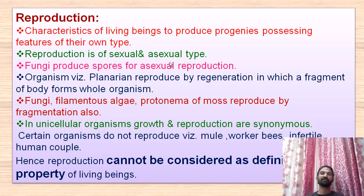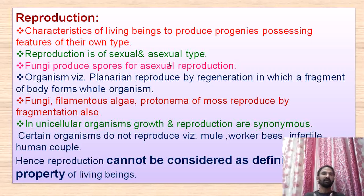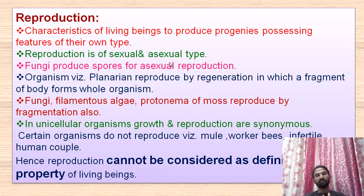In unicellular organisms, growth and reproduction are synonymous. Certain organisms do not reproduce — for example, mule, worker bees, and infertile human couples. Worker bees are sterile and not able to perform reproduction or produce progeny. The infertile human couple also cannot reproduce their child. So reproduction can be considered a defining property of the living thing, but since some organisms do not reproduce, it is also not exclusively a defining property.